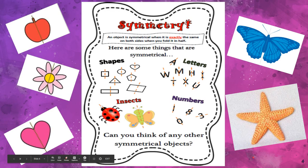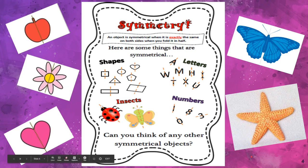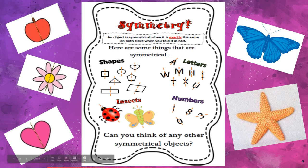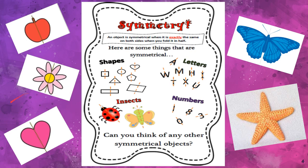An object is symmetrical when it is exactly the same on both sides when you fold it in half. Things like shapes, letters, insects, and numbers can all be symmetrical. So if you look at these things on the side, you can see where there's an imaginary line that shows you that they are the same on both sides.